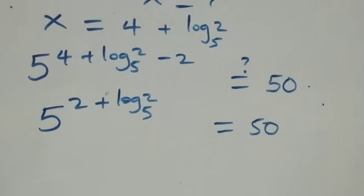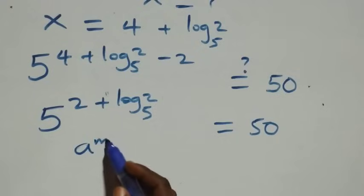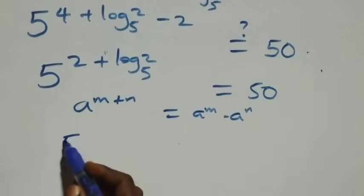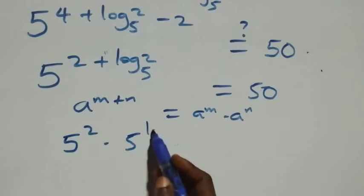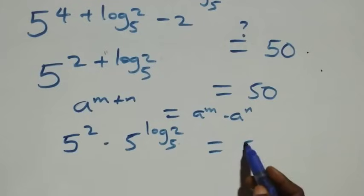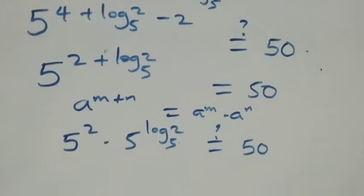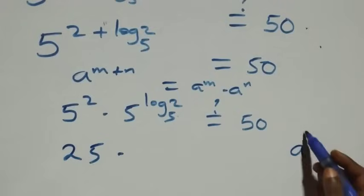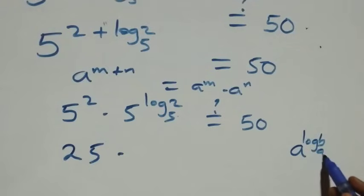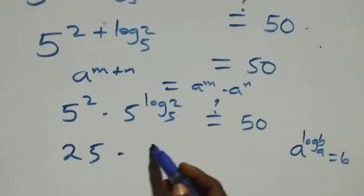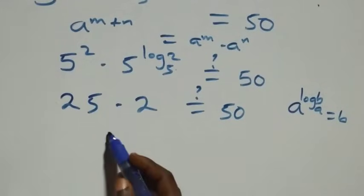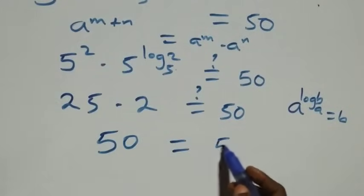We apply the law of indices: a raised to power (n plus n) is the same as a raised to power n times a raised to power n. So here we have 5 squared times 5 raised to power log 2 base 5. Is it equals to 50? Then 5 squared is 5 times 5, which is 25. We apply the identity: a raised to power log b to base a equals b. So here we have 25 times 2, which gives 50. That equals 50 on this side.